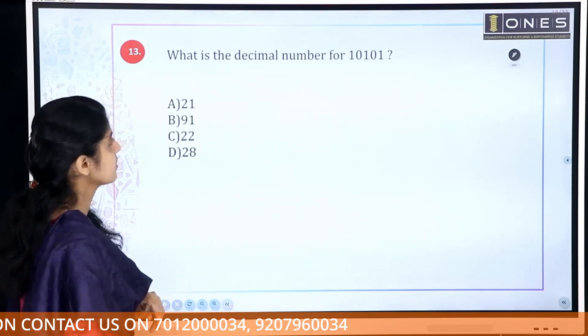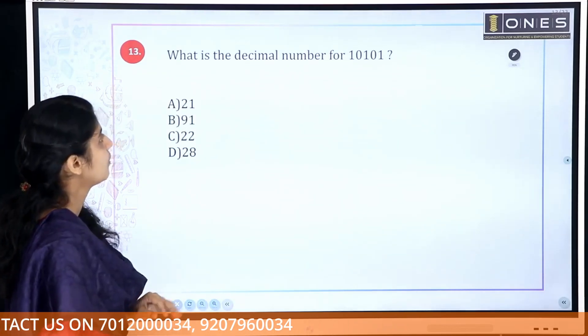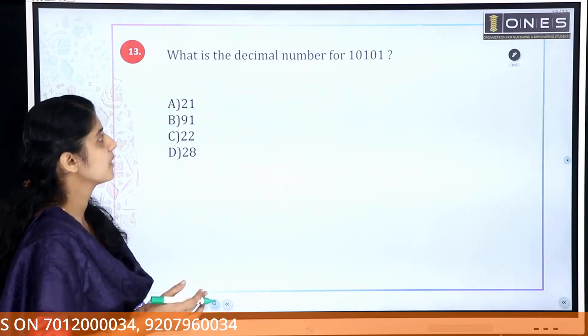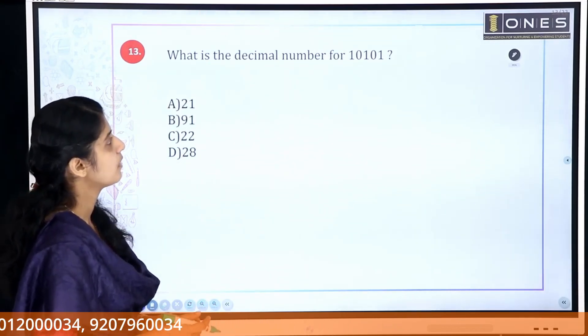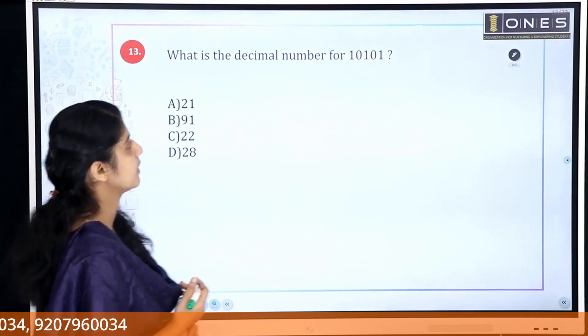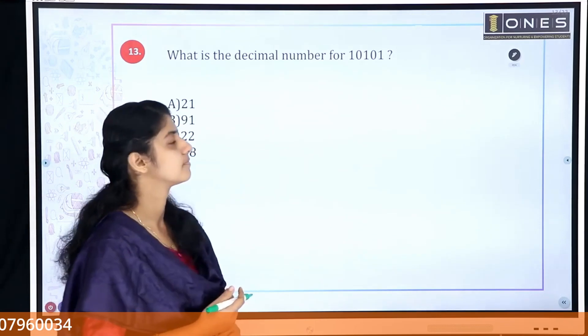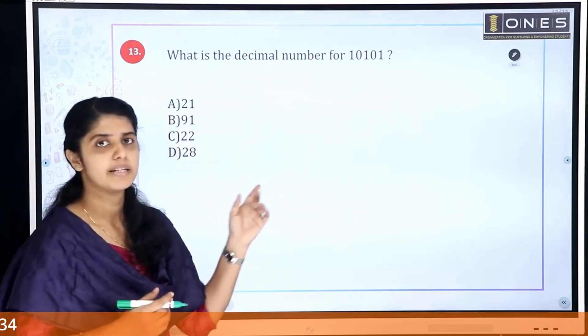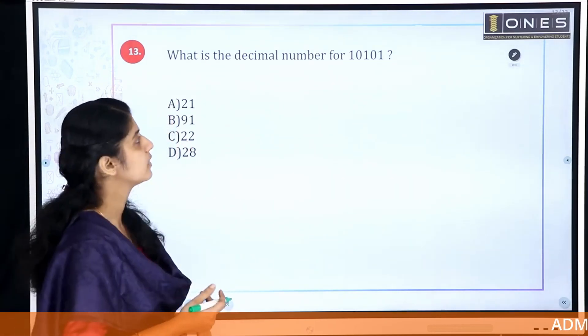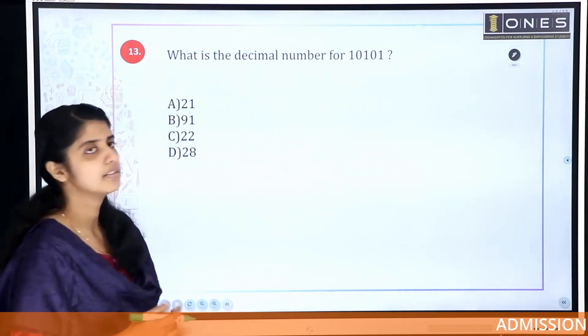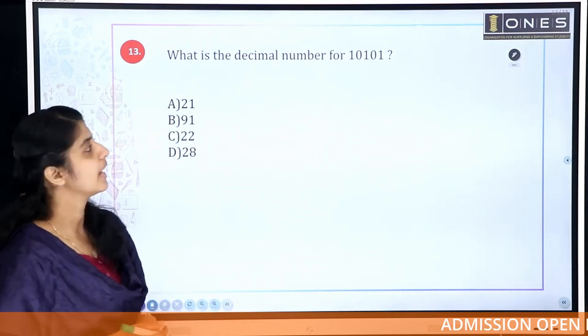Next question: What is the decimal number equivalent of the binary number 10101? If you have a binary number, you can find the decimal value by evaluating each place value.